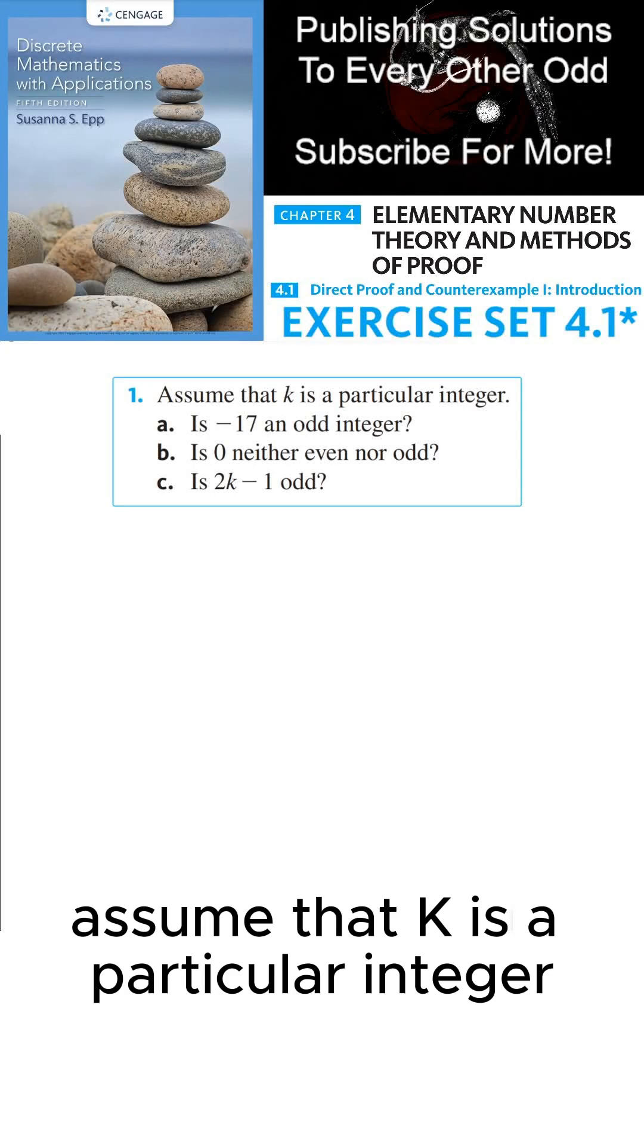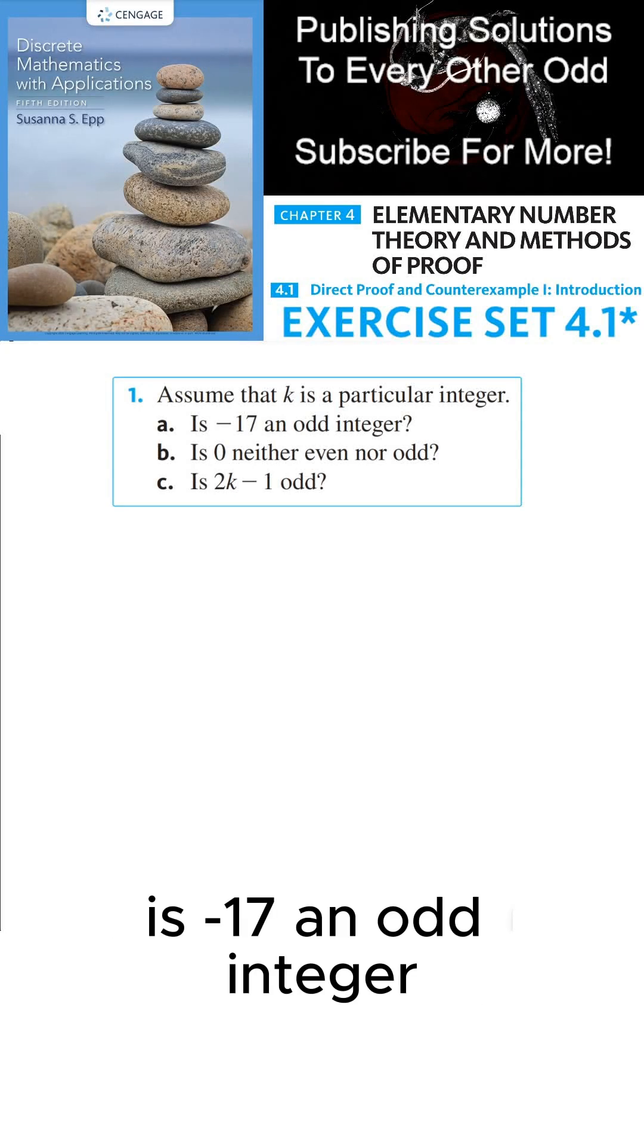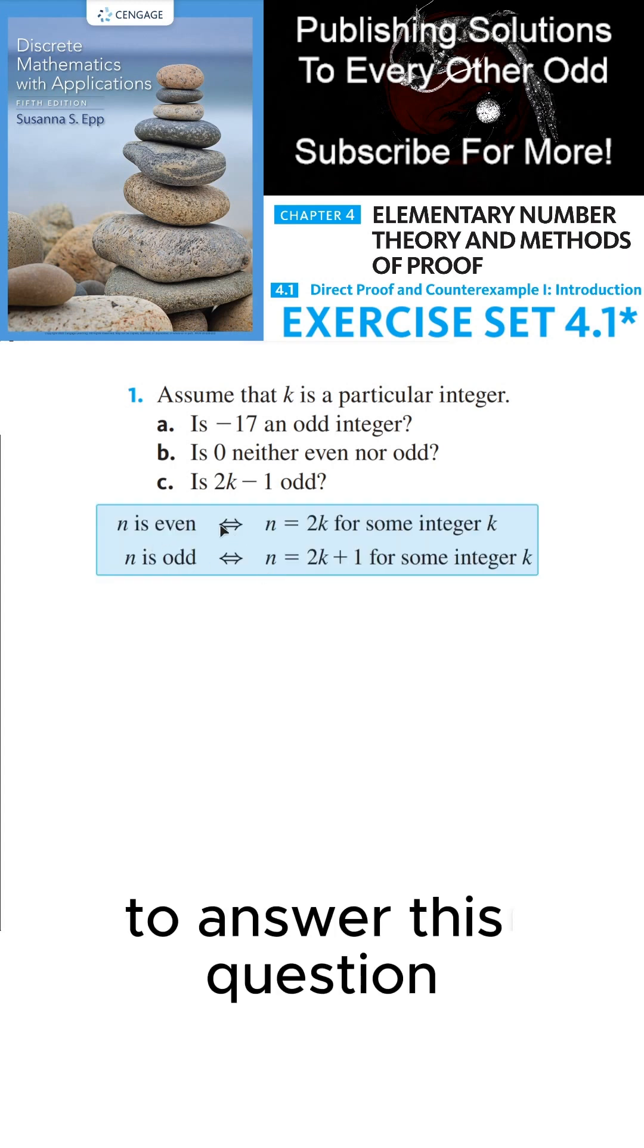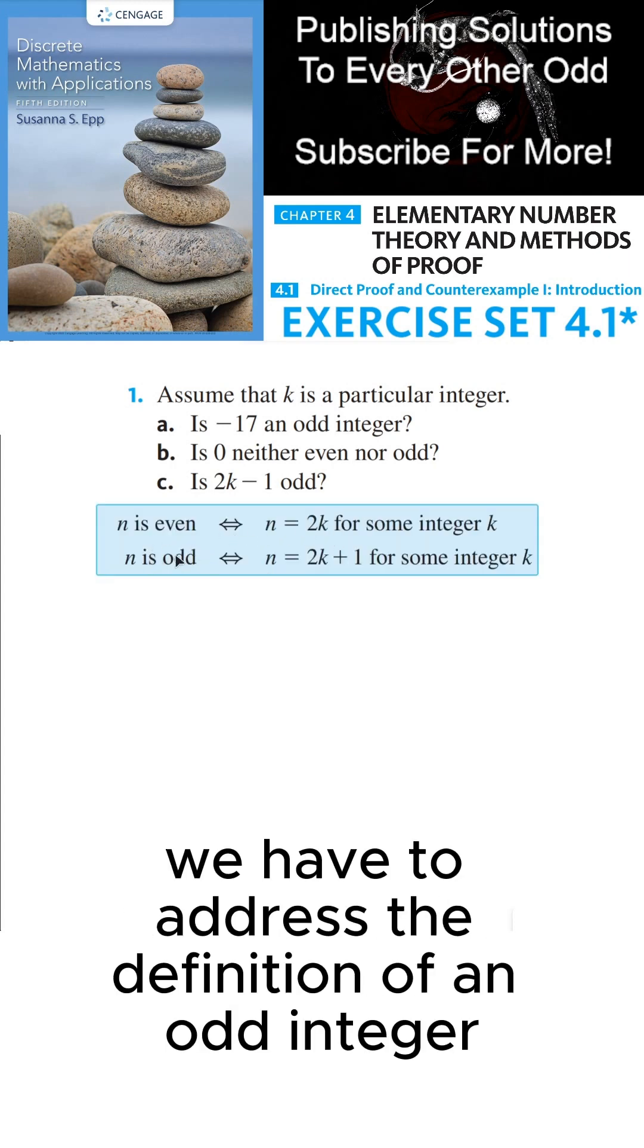Assume that k is a particular integer. Is negative 17 an odd integer? To answer this question, we have to address the definition of an odd integer.